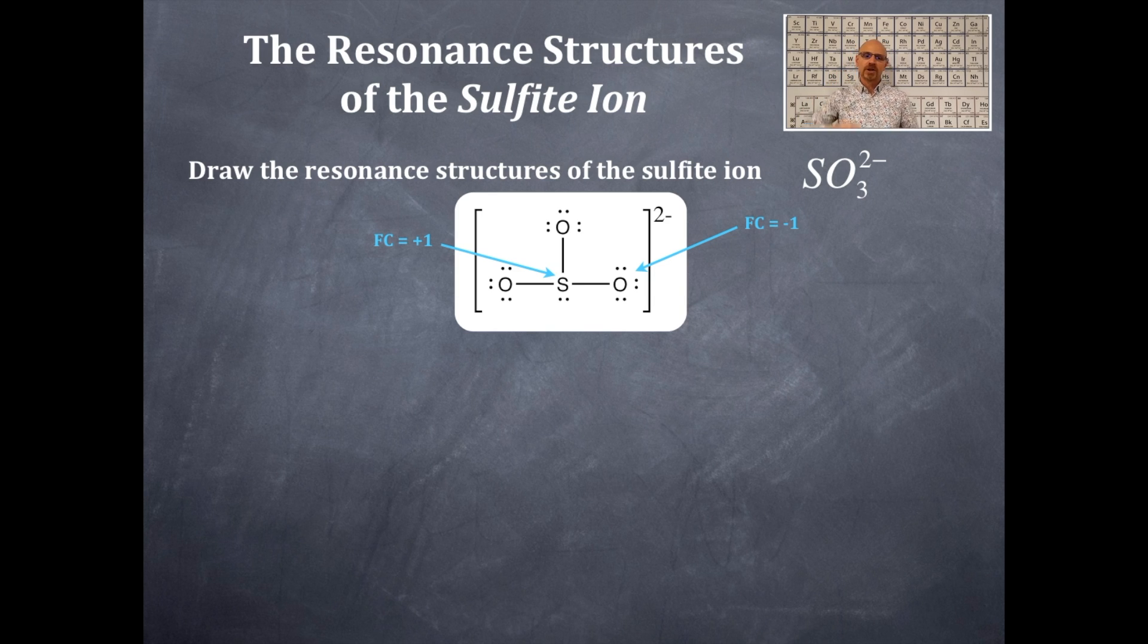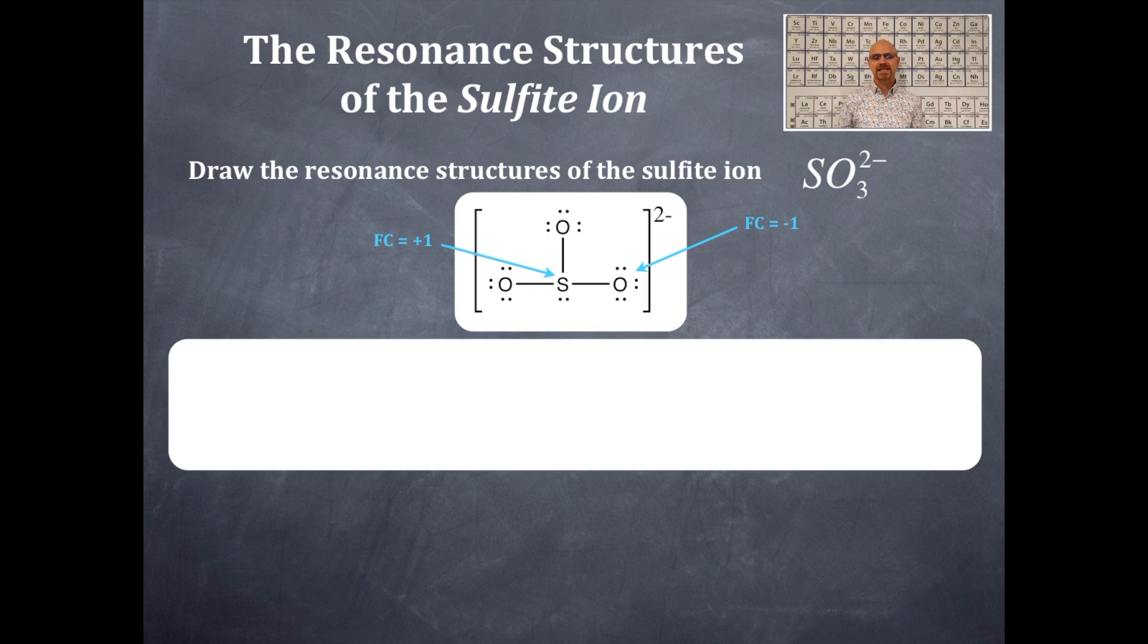Now, can you do another Lewis dot structure that correctly represents the sulfite ion? Another resonance structure? Yes, you can. In fact, many more than just one. So refresh your memory about nitrate ion and then think about this one right here.